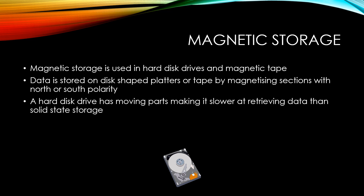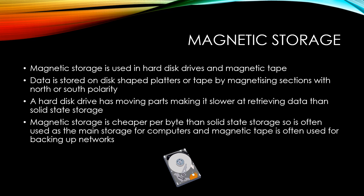A hard disk drive has moving parts, making it slower at retrieving data than solid state storage. Magnetic storage is cheaper per byte than solid state storage, so it is often used as the main storage for computers. Magnetic tape is often used for backing up networks because of its low cost and high storage capacity.